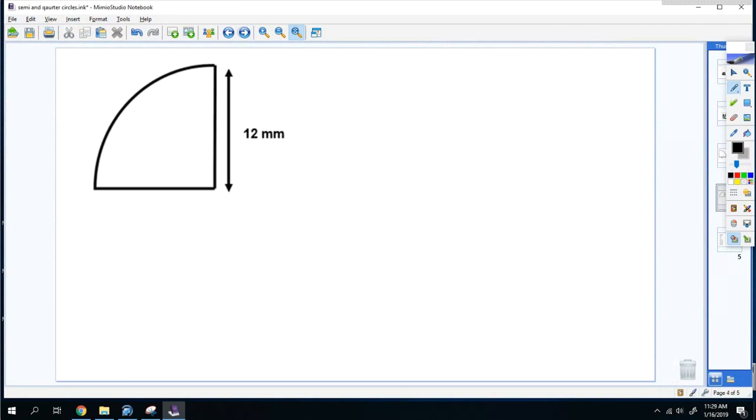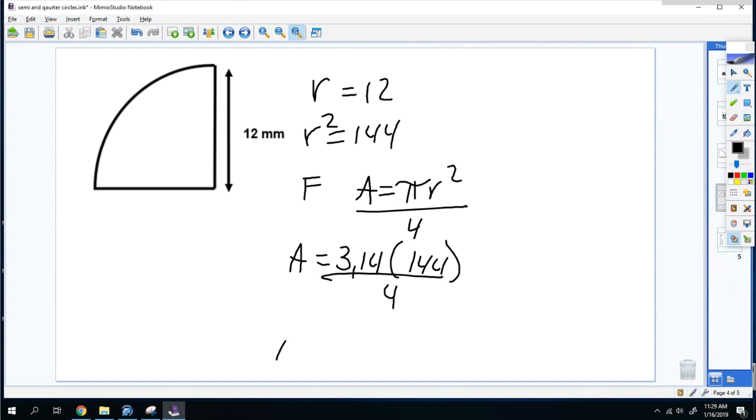Let's try another one. So again, 12 is the radius, so the radius squared is 144. The formula is A = πr² ÷ 4, so we plug that in. Pi is 3.14, the radius squared is 144, and you divide by 4. So I'm going to do 3.14 × 144 and you get 452.16, then divide that by 4 and you get 113.04 millimeters squared.